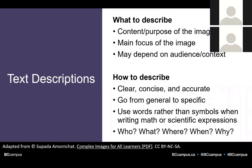When thinking about how to describe images, here are some things to keep in mind. In terms of what to describe, focus on the content and purpose of the image — what is the image trying to convey? Note that this will likely depend on the audience and the context. In terms of how to describe, make sure you are clear, concise, and accurate. Go from general to more specific. Use words rather than symbols when writing math or scientific expressions. And think about the who, what, where, when, and why of the image.